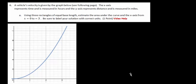A vehicle's velocity is given by the graph below. So the x-axis represents time. I'm going to go ahead and mark that here. This axis represents time and that is in hours.